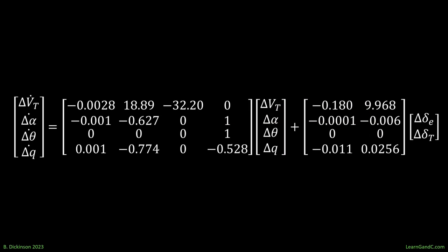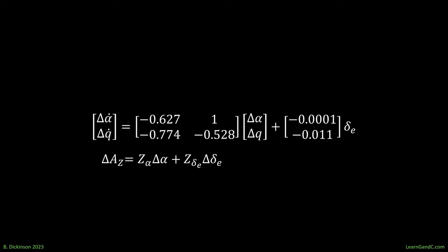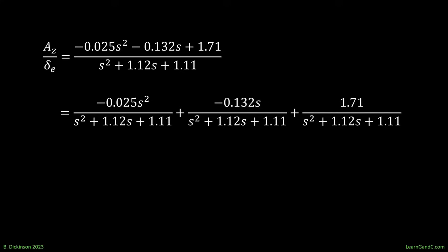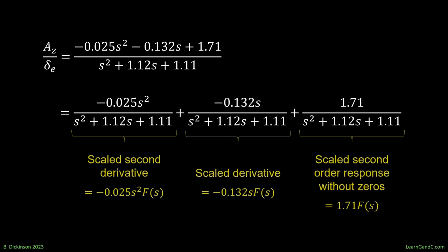Let's mathematically explore this. Extract the short period dynamics. Use the acceleration approximation. Take the Laplace transform to get the AZ over del E transfer function. The numerator has two zeros due to the second-order polynomial. Break it out term by term. The second-order response without the zeros is here. The other two terms are due to the presence of the zeros. They are the scaled first and second derivative of the second-order response. From the signs of each term, we determine that we have a right-half plane zero.